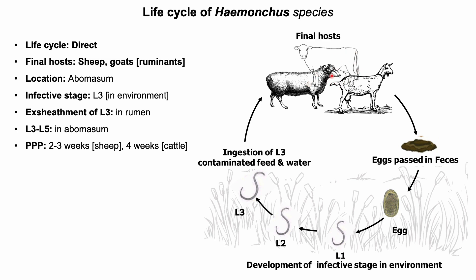The final hosts are infected by ingestion of L3-contaminated grass. Exsheathment of L3 — that is, breakdown of the outer covering — occurs in the rumen of the final host. Development from L3 to L5 occurs in the abomasum, and adults move freely in the mucosa. The pre-patent period is usually two to three weeks in sheep and goats and four weeks in cattle. In unfavorable conditions, or hypobiosis, the pre-patent period will be longer.